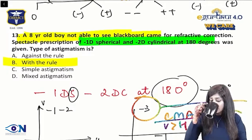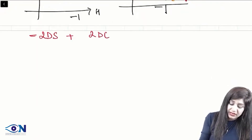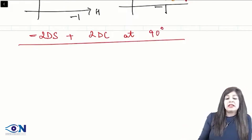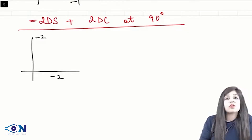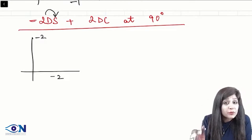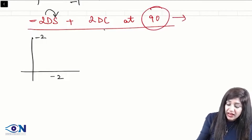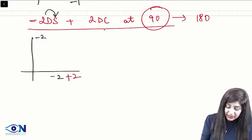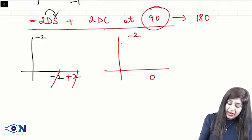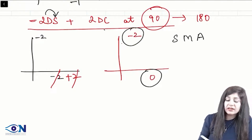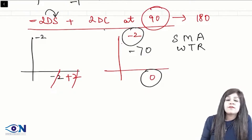Second example: minus 2 diopter spherical and plus 2 diopter cylinder at 90 degrees. The spherical minus 2 acts equally in both meridians. Plus 2 is given at 90 degrees, so it acts at 180 degrees. At 180 degrees: minus 2 plus 2 cancels out to zero. This gives us minus 2 at vertical and zero at horizontal — simple myopic astigmatism. Minus is more than zero, and vertical is more than horizontal, so this is also with-the-rule astigmatism.